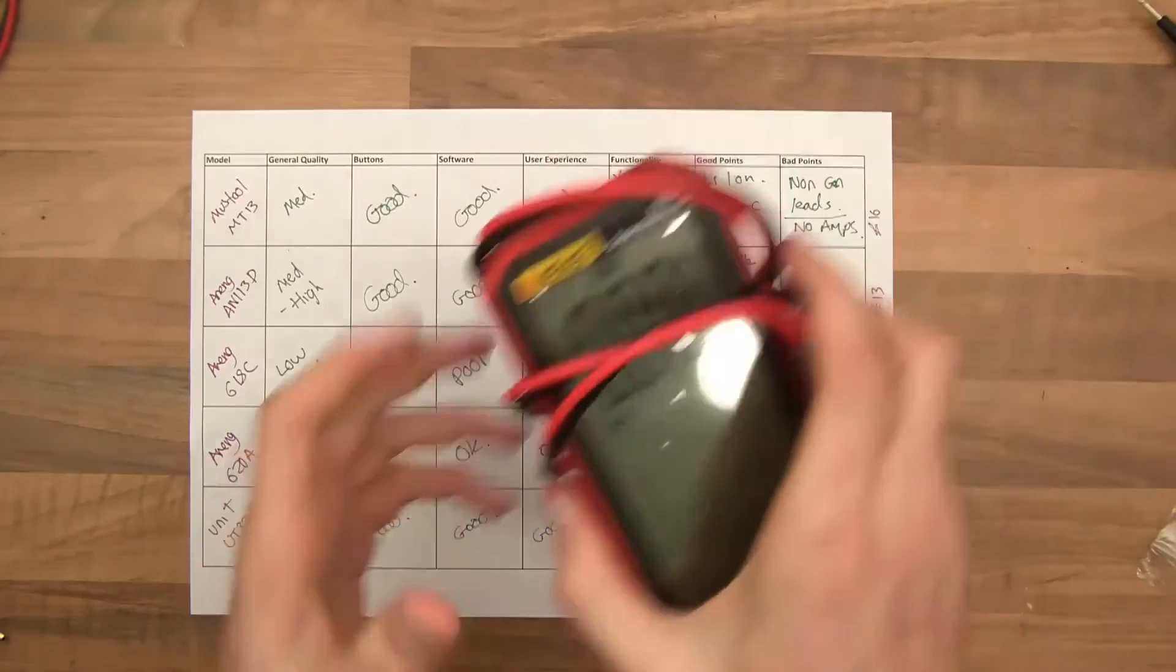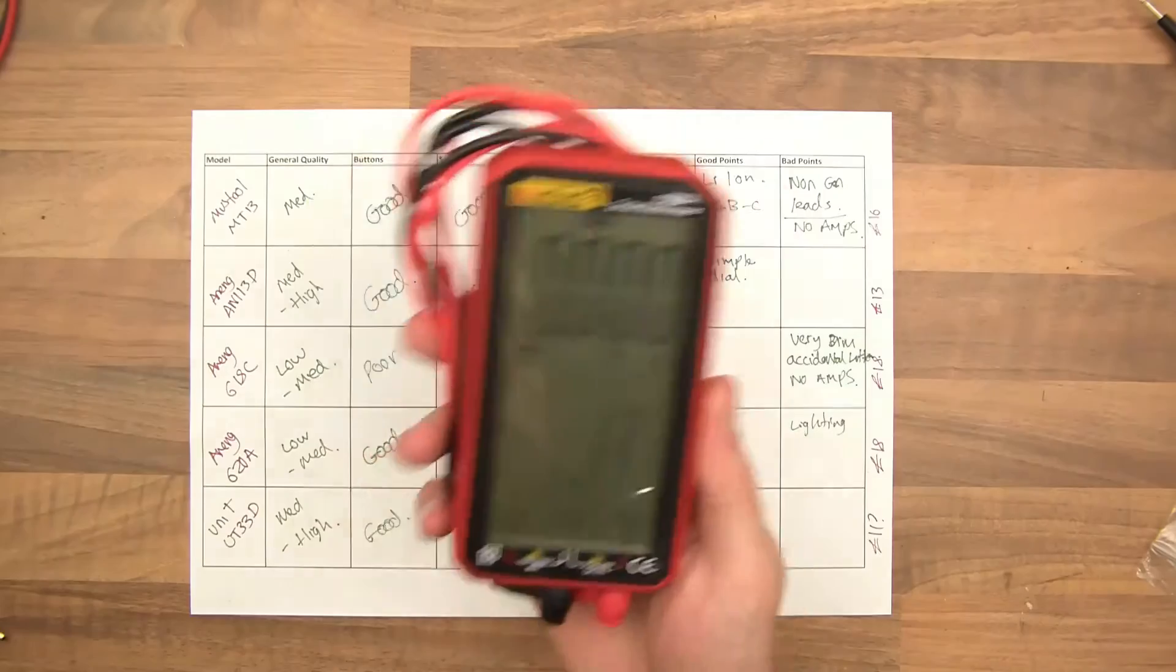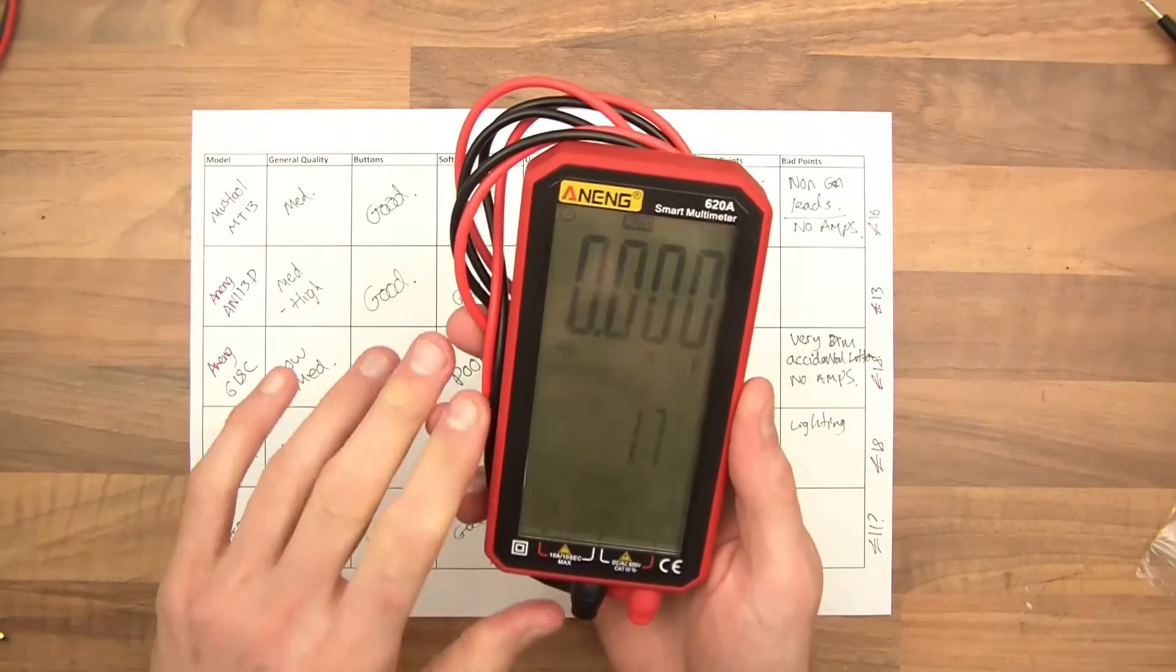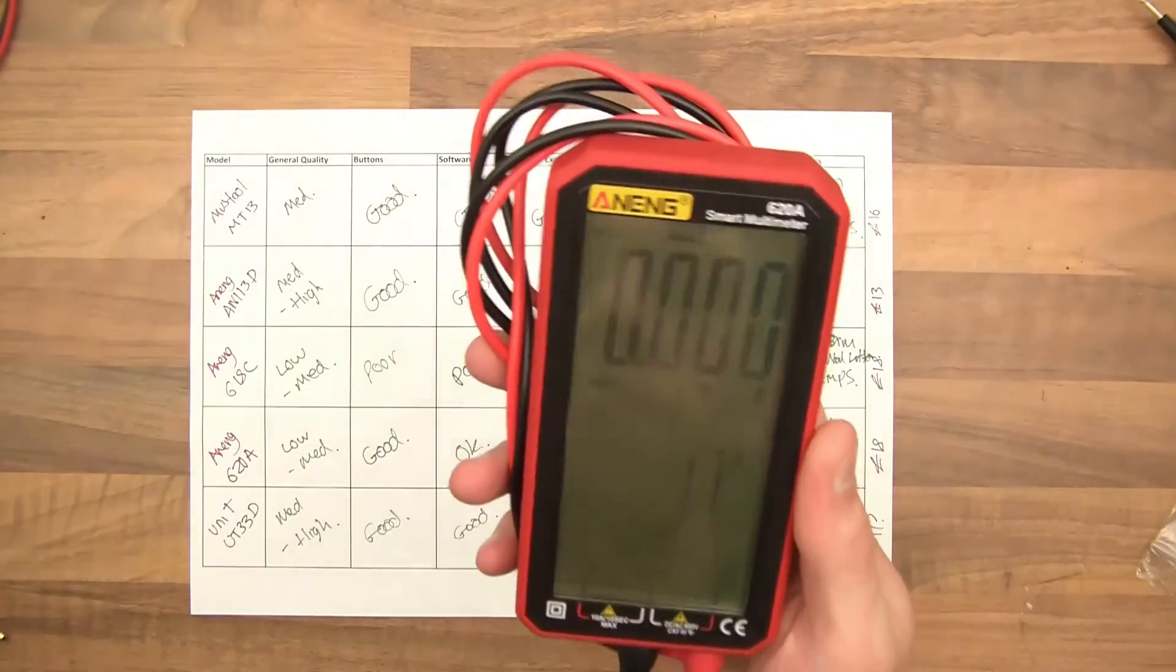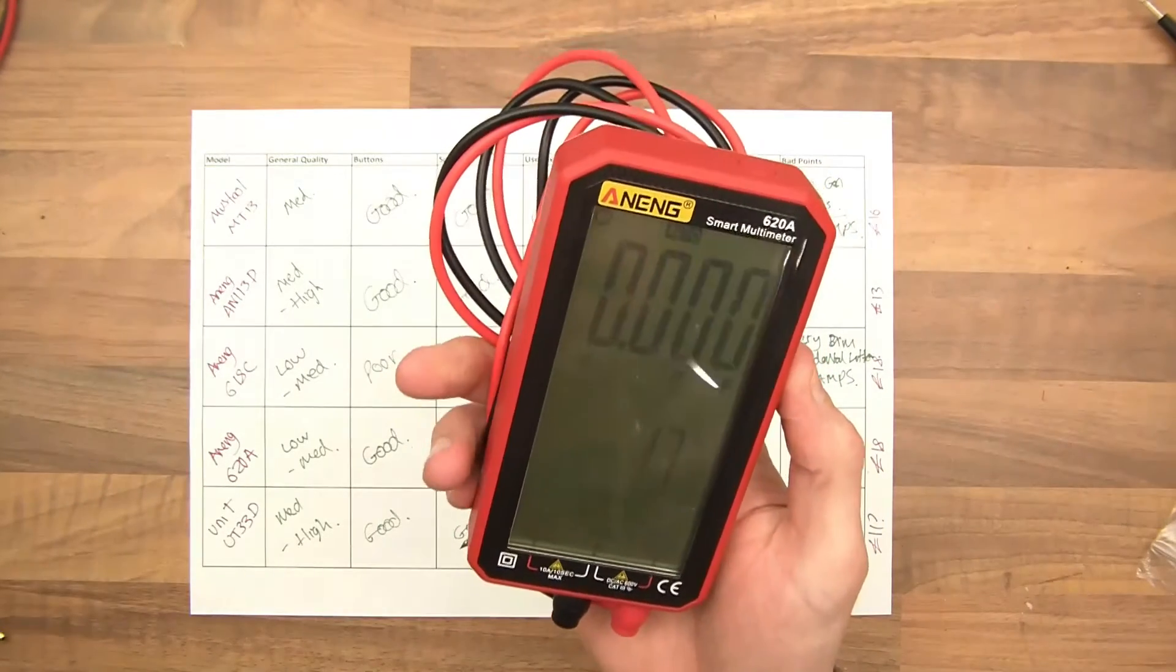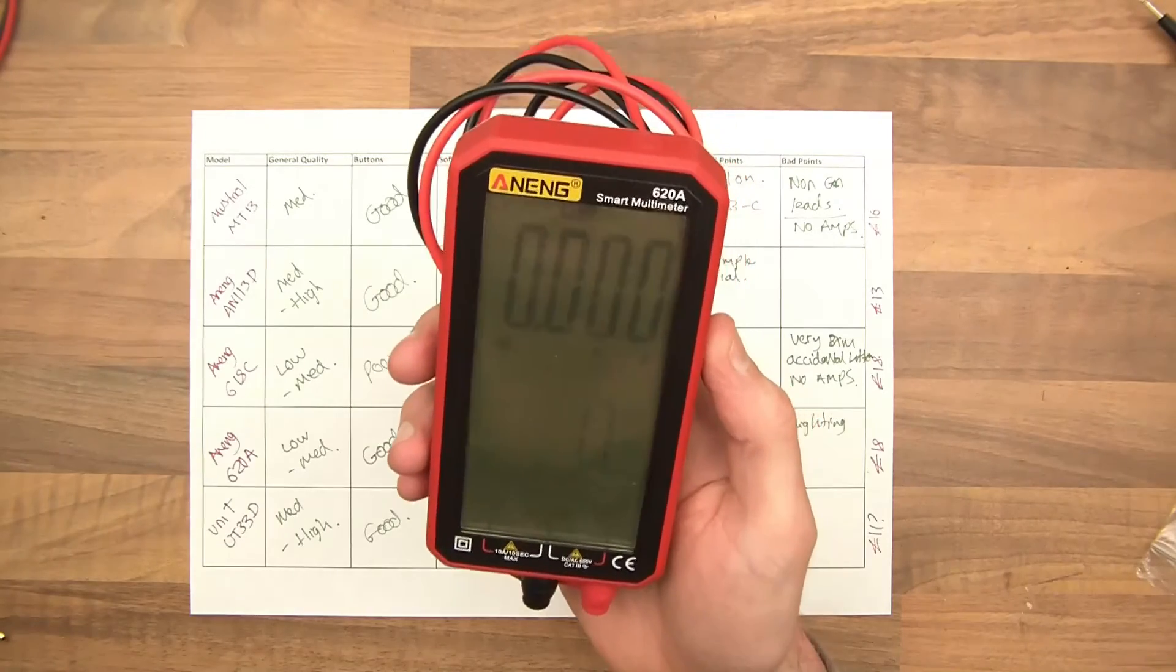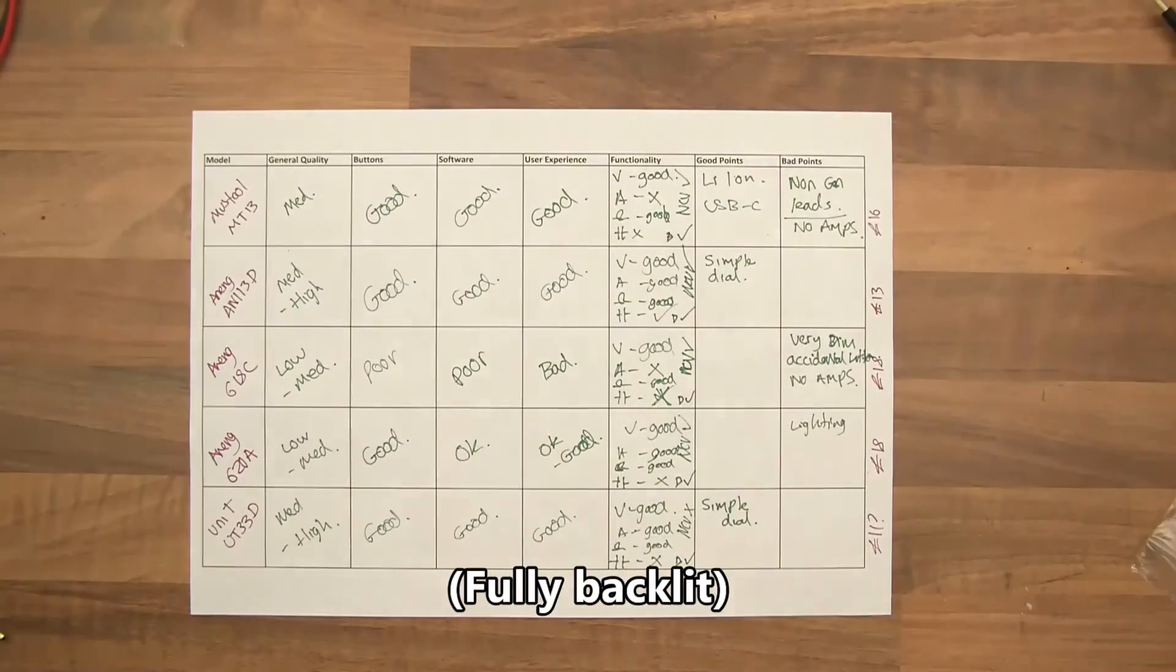And what have we got next? This one. Anang 620A. Anything this one can do, the one that I've just shown you can probably do better in my opinion. What I would say about this one though, is that if you can't see, if you have problems looking at the screen, this one is actually quite good. I would say it's not as good in terms of menu, user interface, user experience, that sort of thing. But the advantage is that it has a backlit screen. You can turn that on. And it also has the big digits.